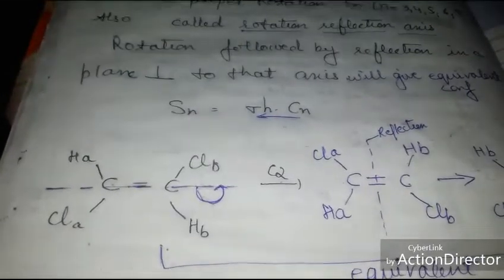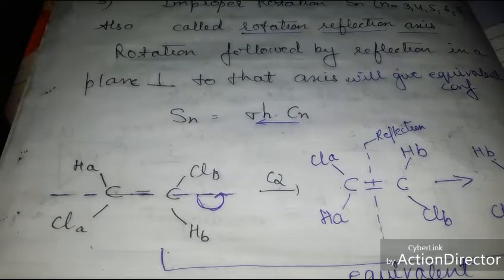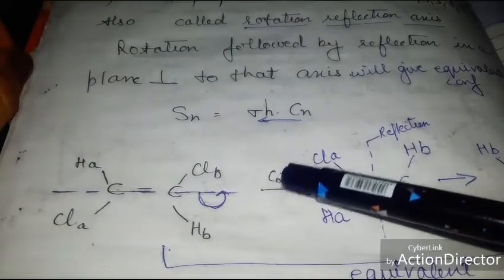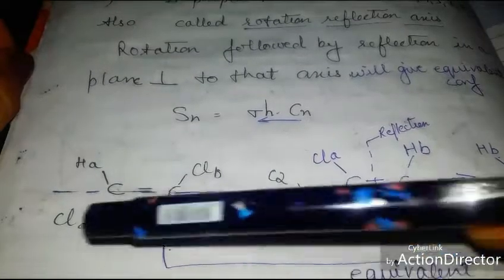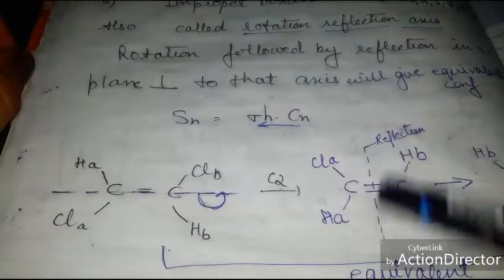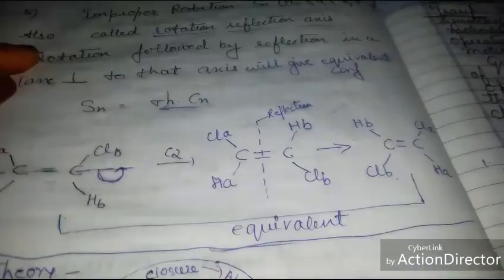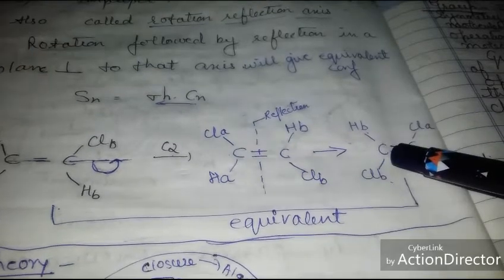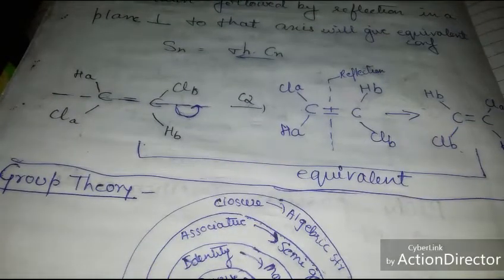The fifth operation is the improper rotation axis, denoted by Sₙ. In this operation you first rotate the molecule, then reflect it perpendicular to that rotation axis. Consider the example: applying C2 rotation (180-degree) moves these groups up and others down, followed by a reflection perpendicular to the rotation axis. Comparing the resulting molecule with the original, they are equivalent.